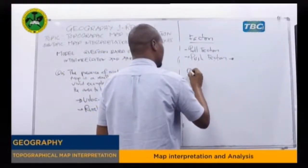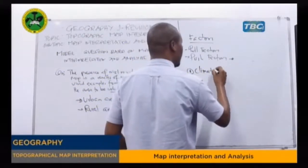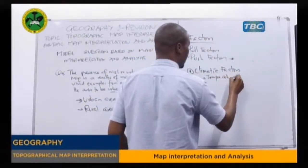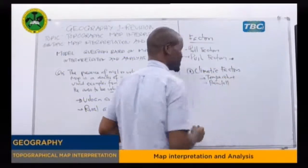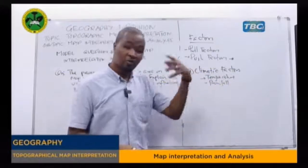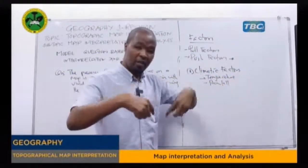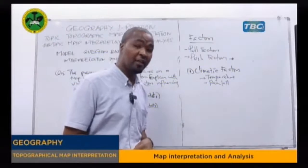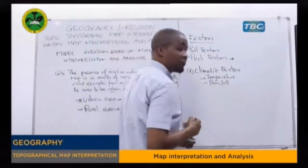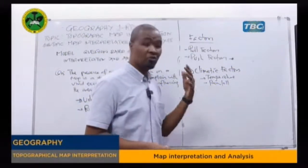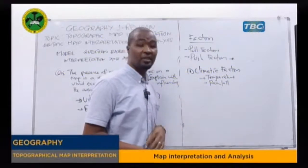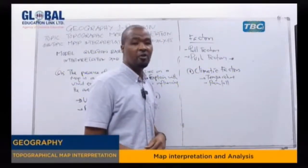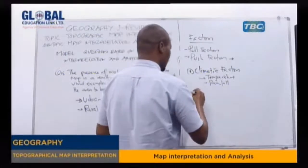The first general factor is the climatic condition — climatic factors such as temperature and rainfall. Some people move from their area of origin because it is too hot. They shift to an area where the temperature is moderate. Rainfall also influences people to shift. For instance, people involved in agricultural activity may shift to areas with higher rainfall in order to conduct their farming.